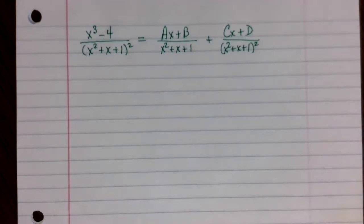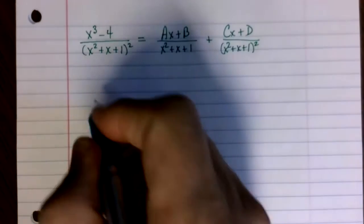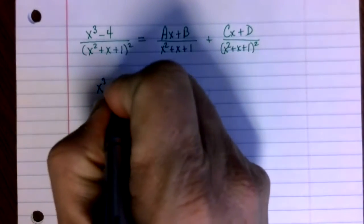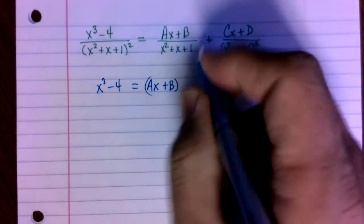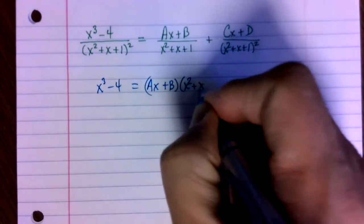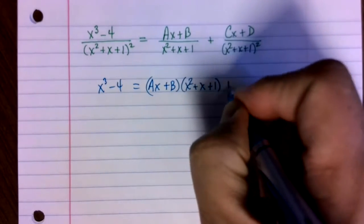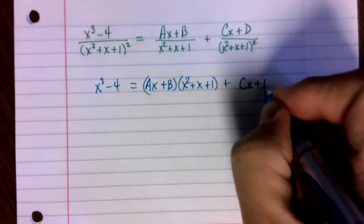All right, so we're going to clear out the denominator. So we have that x cubed minus 4 is equal to ax plus b times x squared plus x plus 1 plus cx plus d.